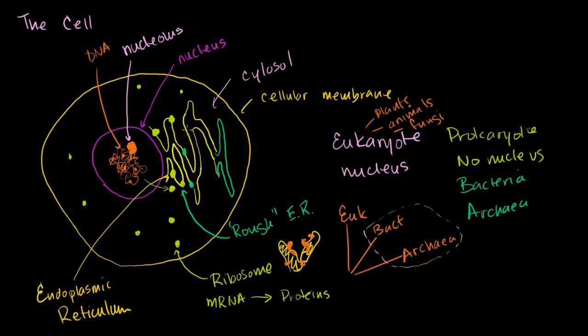Where there are no ribosomes attached, that is the smooth endoplasmic reticulum. Following the membranes, we eventually get to the Golgi bodies.